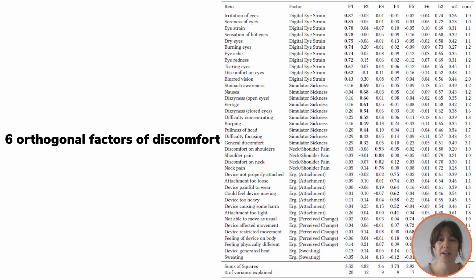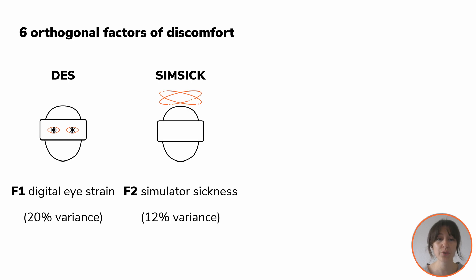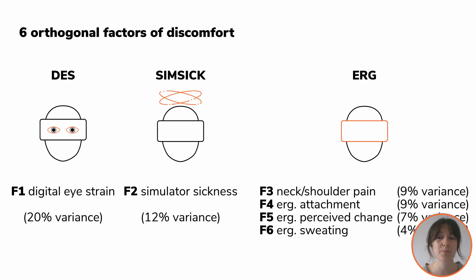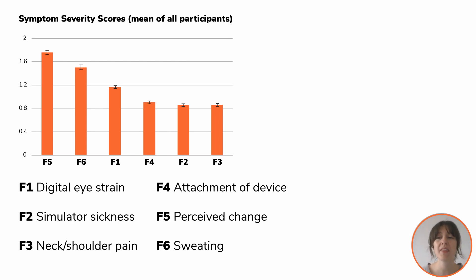We found six orthogonal factors of discomfort in VR-HMDs: one being digital eye strain, one simulator sickness, and four addressing specific aspects of ergonomic symptoms. When comparing the mean symptom severity scores, the two most severe factors were perceived change in sweating, followed by digital eye strain and symptoms caused by the attachment of the device. Simulator sickness and neck and shoulder pain were the least severe symptoms.